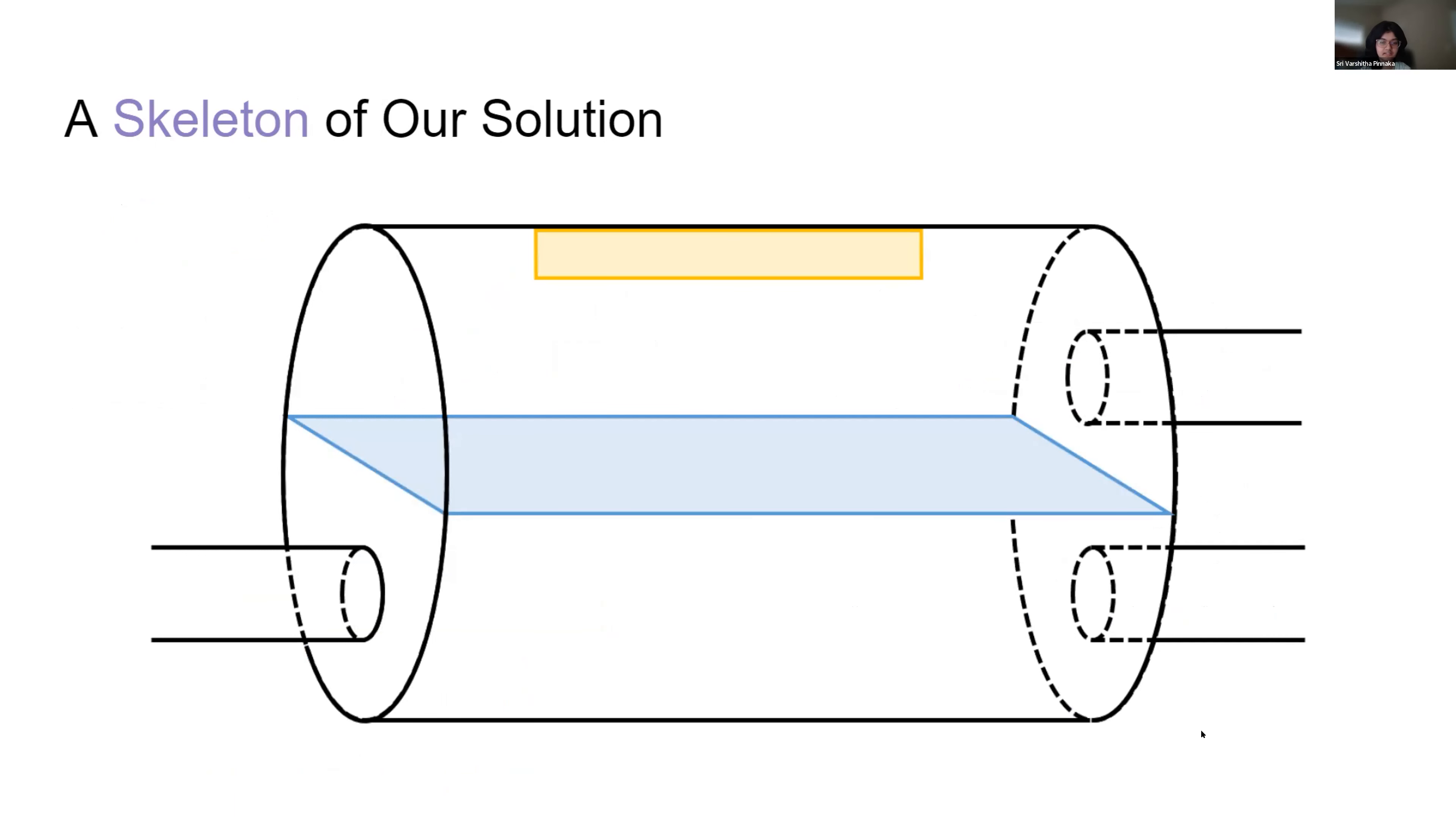As you can see here, we have a skeleton of our solution based on some of the previous designs. Two things that we identified as specifically important for our design were the use of a membrane shown here in blue and the use of a magnet shown here in yellow. We will explain more about these two components and how they developed throughout our design in the future slides.